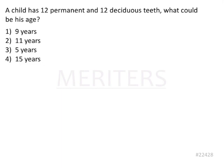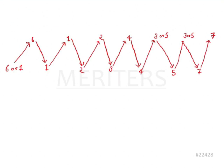The question here is: a child has 12 permanent and 12 deciduous teeth. What could be his age? We know the eruption sequence in primary teeth is ABDCE. These teeth will stay until around 6 years of age, when the first permanent molar — the mandibular molar — comes. Let's correlate this with the eruption sequence of the permanent teeth.